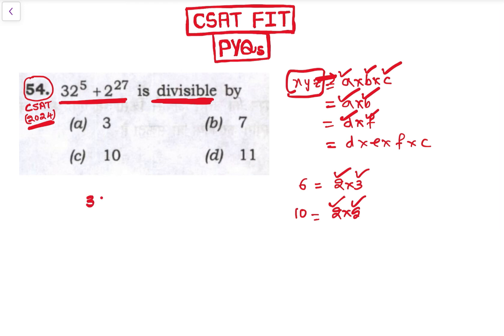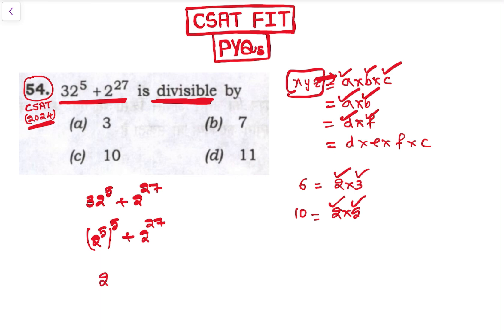Now, 32 to the power 5 plus 2 to the power 27. Since 32 can be written as 2 to the power 5, this becomes (2⁵)⁵ + 2²⁷. And (2⁵)⁵ equals 2 to the power 25. So the expression becomes 2²⁵ + 2²⁷.